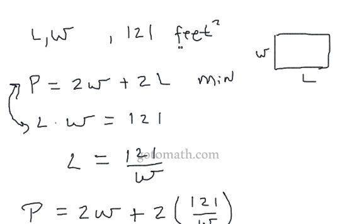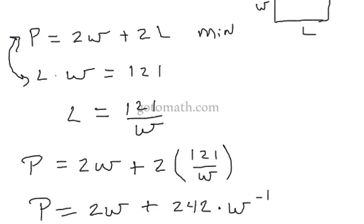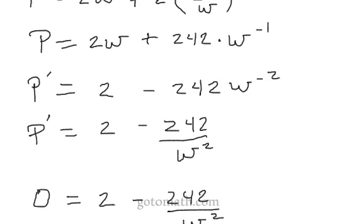I think I said this was the perimeter, right? But the 121 obviously is the area of the rectangle. Sorry about that. Let's get back down to where we were at.